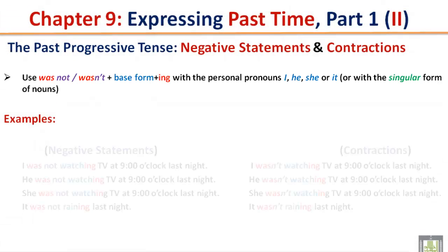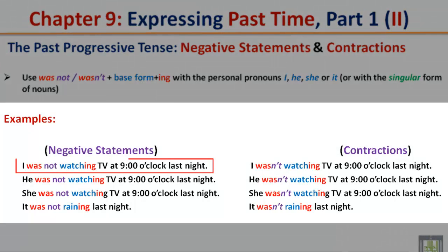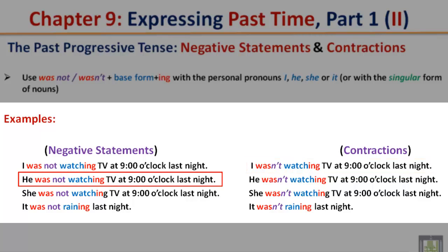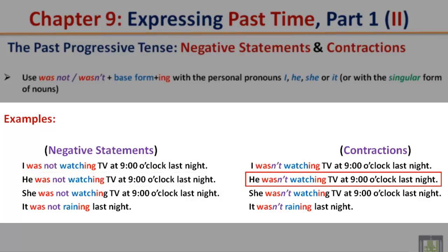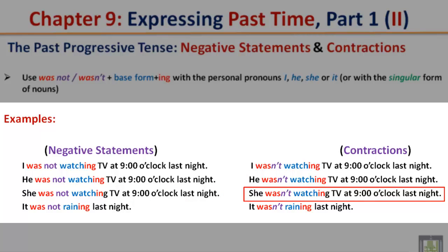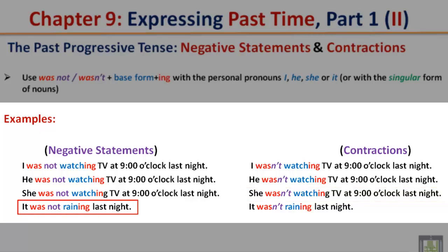Examples — Negative Statements. I was not watching TV at 9 o'clock last night. I wasn't watching TV at 9 o'clock last night. He was not watching TV at 9 o'clock last night. He wasn't watching TV at 9 o'clock last night. She was not watching TV at 9 o'clock last night. She wasn't watching TV at 9 o'clock last night.